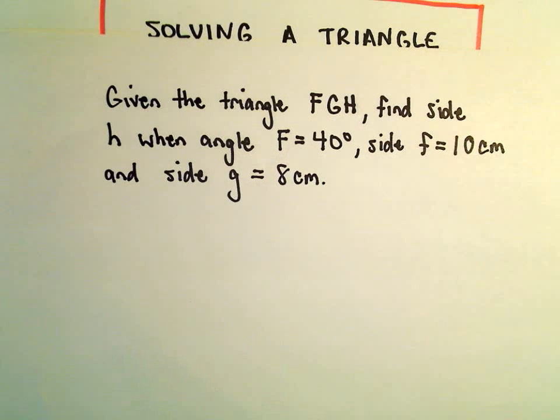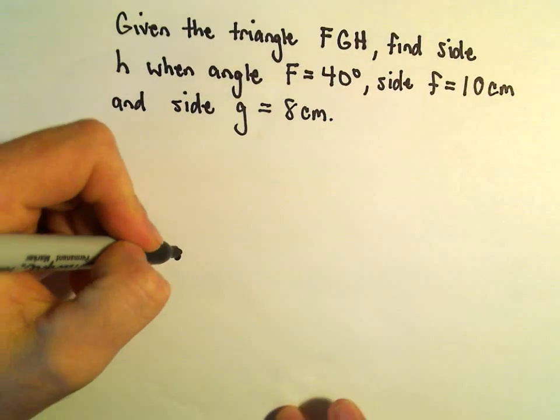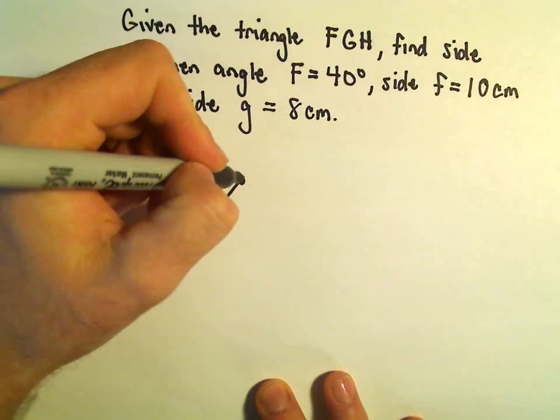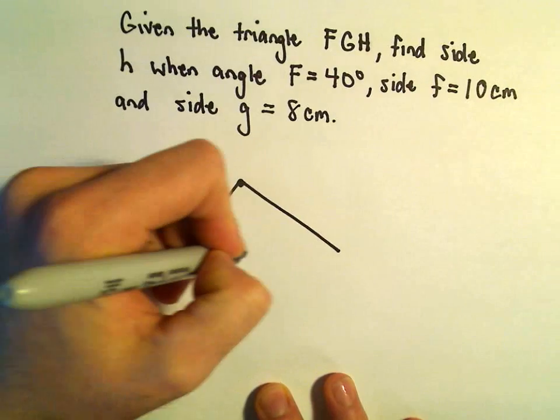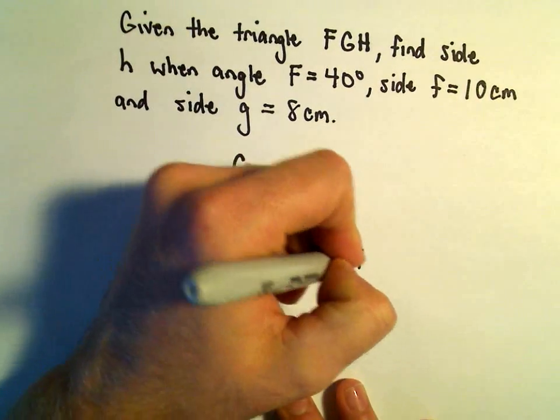All right, so here we've got an example. We've got the triangle FGH. I'm going to go ahead and just make a triangle here at random. Let's label F, G, and H.